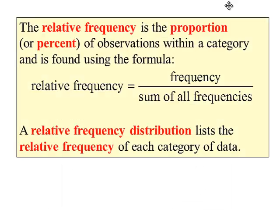The next table we're going to look at is what we call a relative frequency table or relative frequency distribution. The relative frequency is the proportion or sometimes is expressed as a percent of observations within a category and is found by the following formula. The formula is you take the frequency and divide it by the sum of all the frequencies. A relative frequency distribution lists the relative frequency of each category of the data.